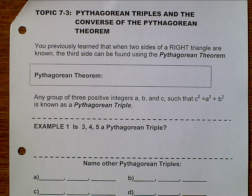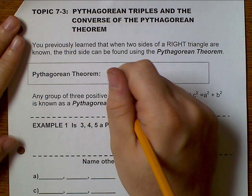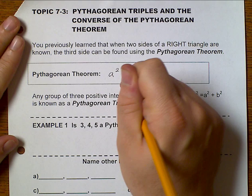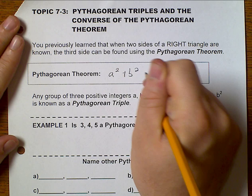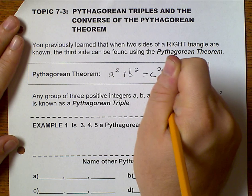Hello, this is topic 7-3 over Pythagorean Triples and the Converse of the Pythagorean Theorem. So we've already talked about the Pythagorean Theorem, just to review, it is a squared plus b squared equals c squared.